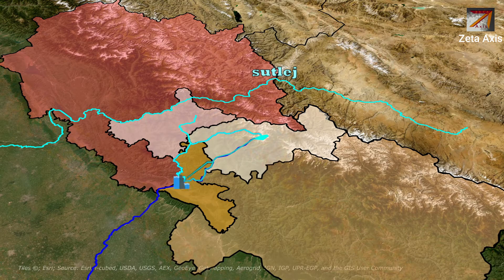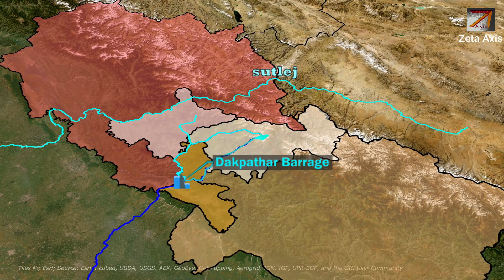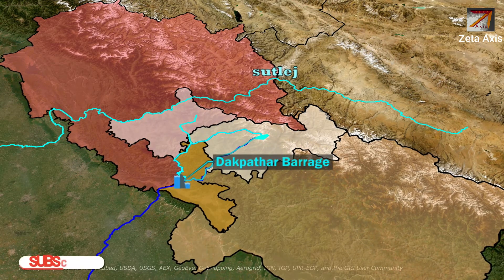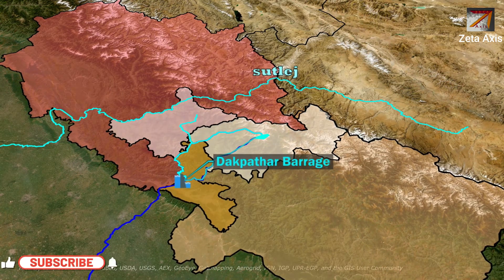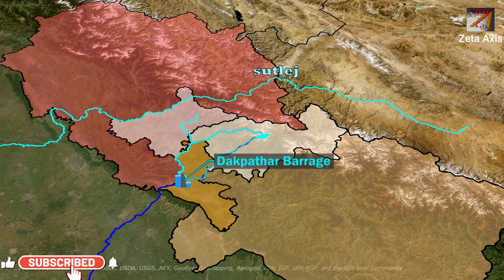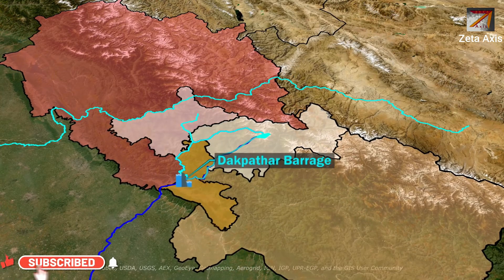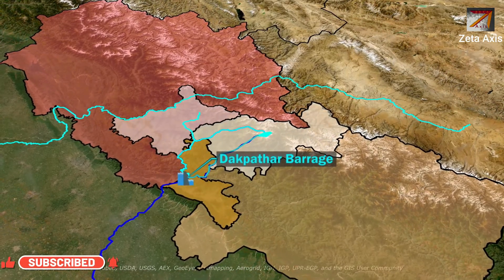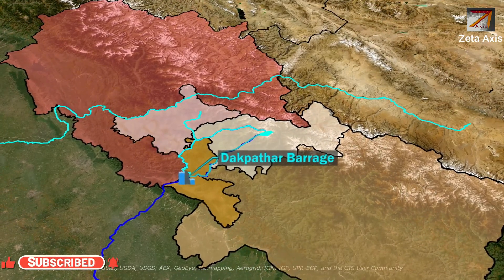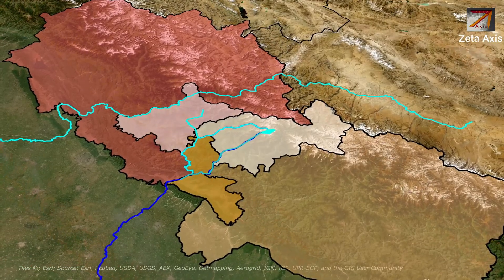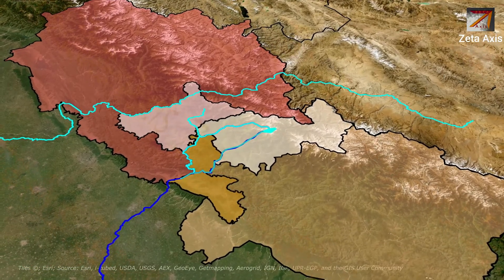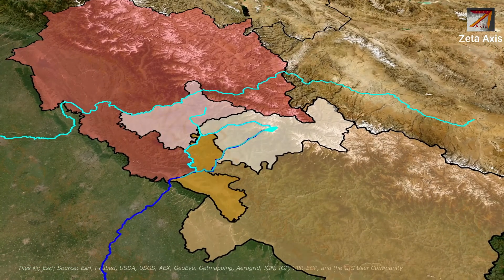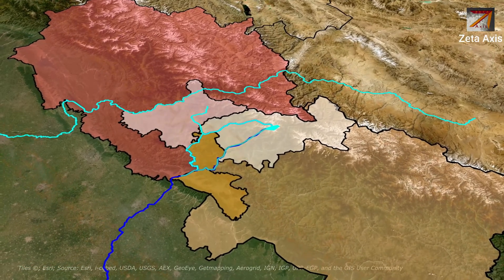After the confluence, Dakpattar Barrage is built on the Yamuna river, from where the East Yamuna Canal begins. After the Dakpattar Barrage, the Yamuna river forms a boundary between Uttarakhand and Himachal Pradesh.